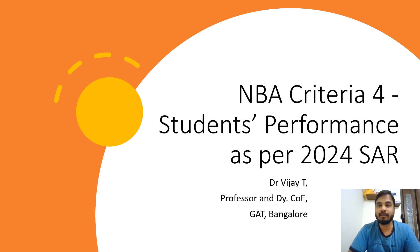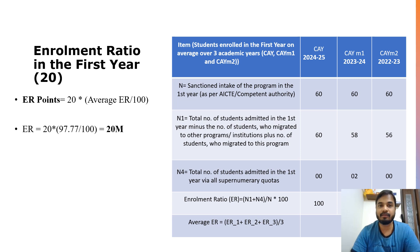Hello everyone, welcome back. Today we will be discussing Criteria 4 of the National Board of Accreditation, which relates to student performance with respect to the 2024 SAR. This criteria carries a total of 120 marks — 95 marks have been allotted to data and numbers, where greater numbers mean higher marks. The remaining 25 marks relate to professional activities, student performance, publications, magazines, and other things.